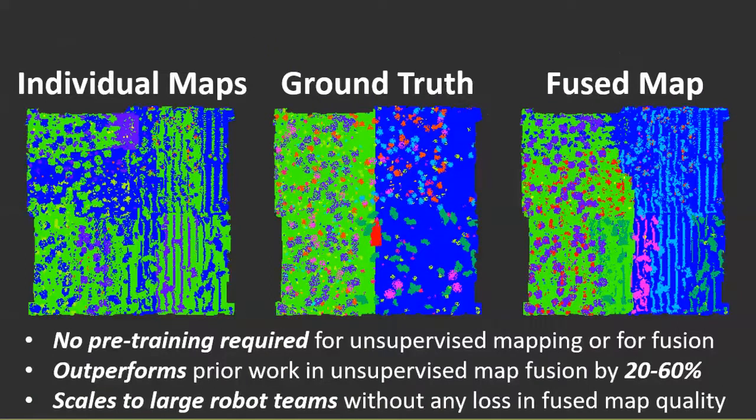By leveraging a state-of-the-art spatiotemporal topic model and multi-way matching algorithm, our system produces fused maps that closely resemble the ground truth, despite not requiring any pre-training. Our system also outperforms the state-of-the-art in this area by 20-60%. In fact, to our knowledge, our system is the first to show mapping performance that generally increases rather than decreases as more robots are used.